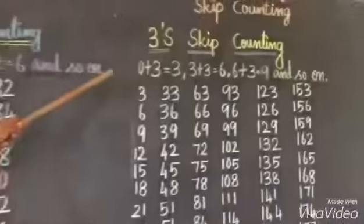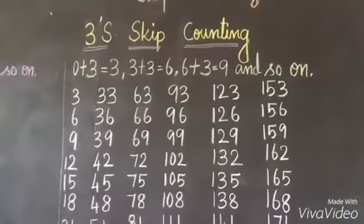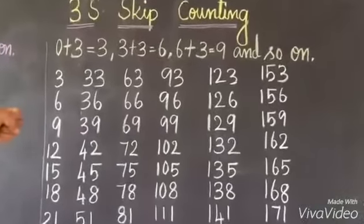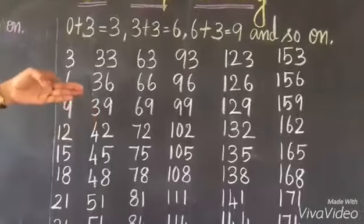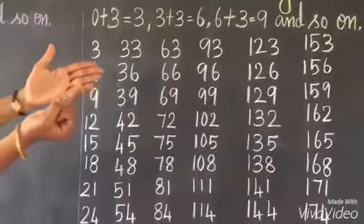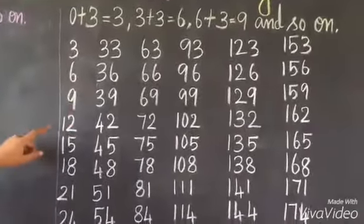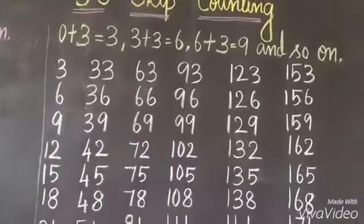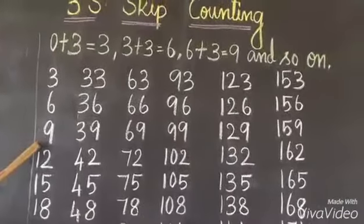3 Skip Counting. Here, we add 3 each time. 0 plus 3, 3. 3 plus 3, 6. 6 plus 3, 9. Likewise, we add the same number in our mind.